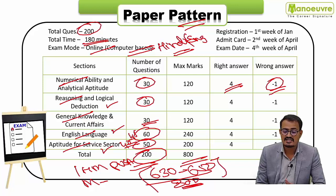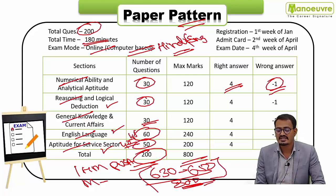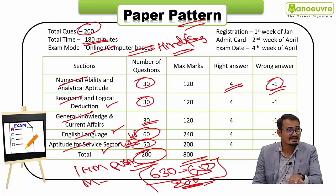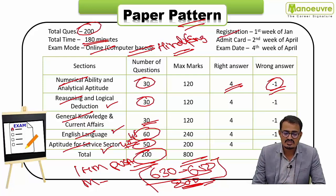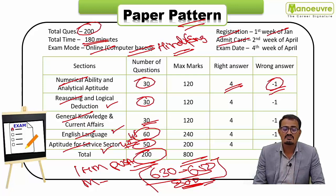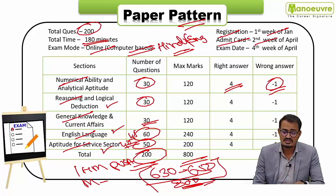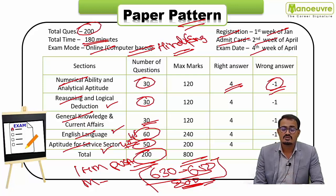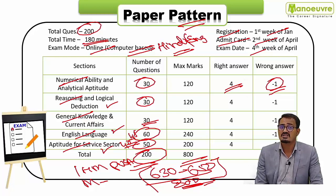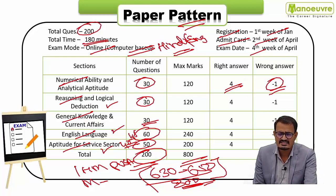Regarding important tentative dates: the registration process starts in the first week of January each year, admit cards are released in the second week of April, and the exam is held in the fourth week of April. Results come out by end of May, after which the selection process begins.